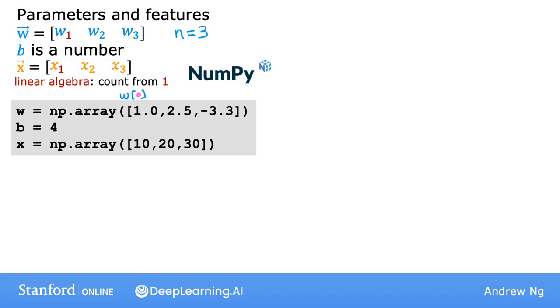Because in Python the indexing of arrays starts from zero, you would access the first value of w using w[0], the second value using w[1], and the third using w[2]. So the indexing here goes from zero, one, to two rather than one, two, to three. Similarly, to access individual features of x, you would use x[0], x[1], and x[2]. Many programming languages including Python start counting from zero rather than one.